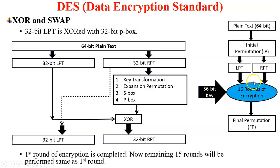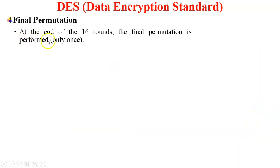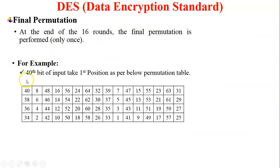After completion of the 16 rounds, the final permutation is performed — it is performed only once. At the end of the 16 rounds, the final permutation is performed only once. For example, the 40th bit of the input takes the first position as per the permutation table. This permutation table is provided by the DES developer and must be followed as given.